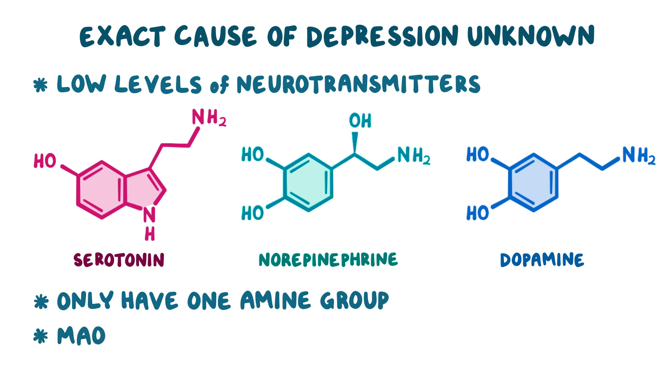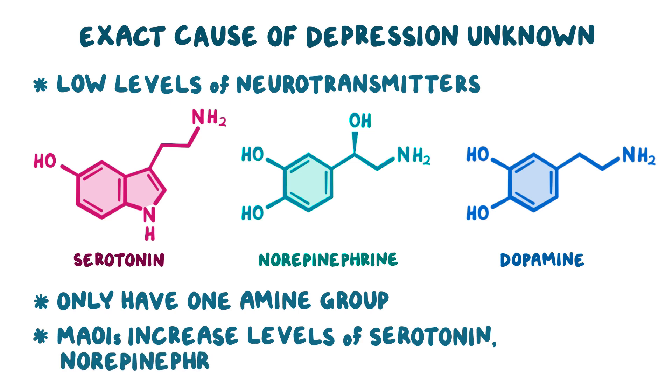Now monoamine oxidase inhibitors work by increasing levels of serotonin, norepinephrine, and dopamine, which help to alleviate the symptoms of depression. Within the brain, there are many different types of neurons, but we're going to focus on only three.